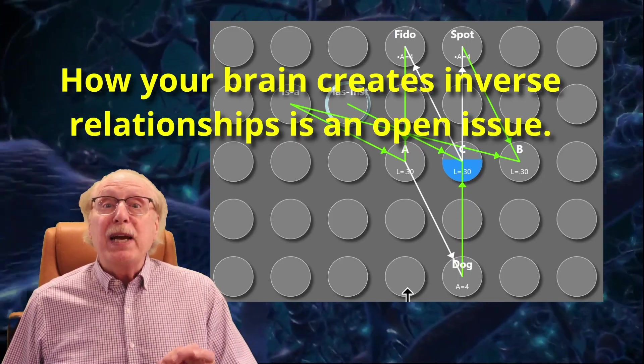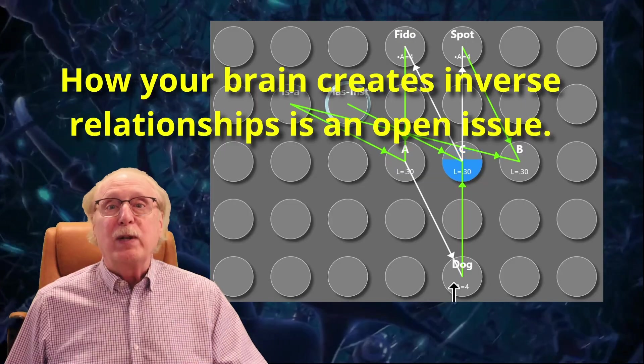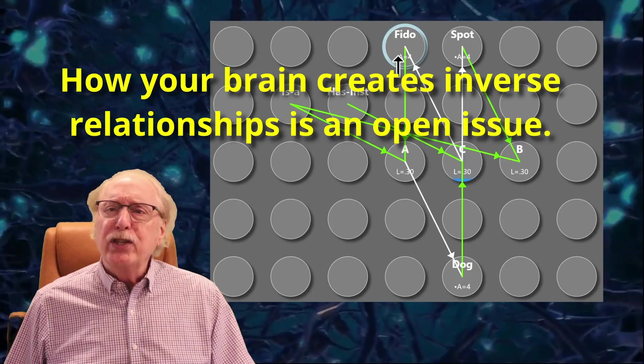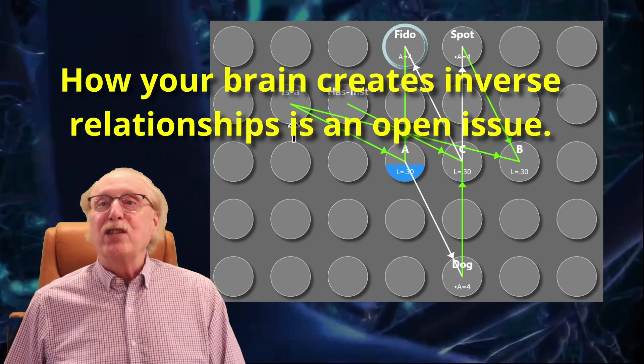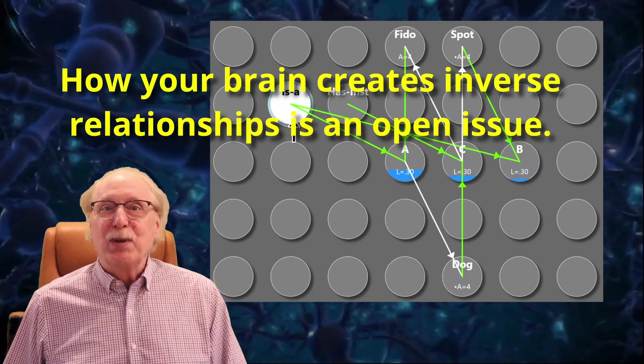While you might imagine a mechanism which explains how our brains learn forward relationships with Hebbian learning, automatically adding inverse relationships is trickier. I've seen no research which explains this, so in a future video I'll explain how I see it must happen too.